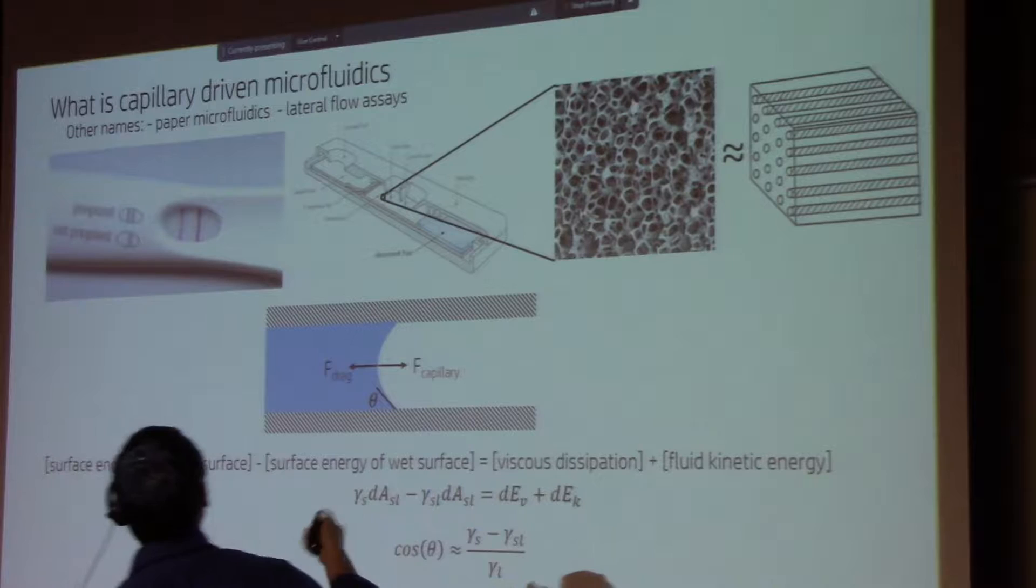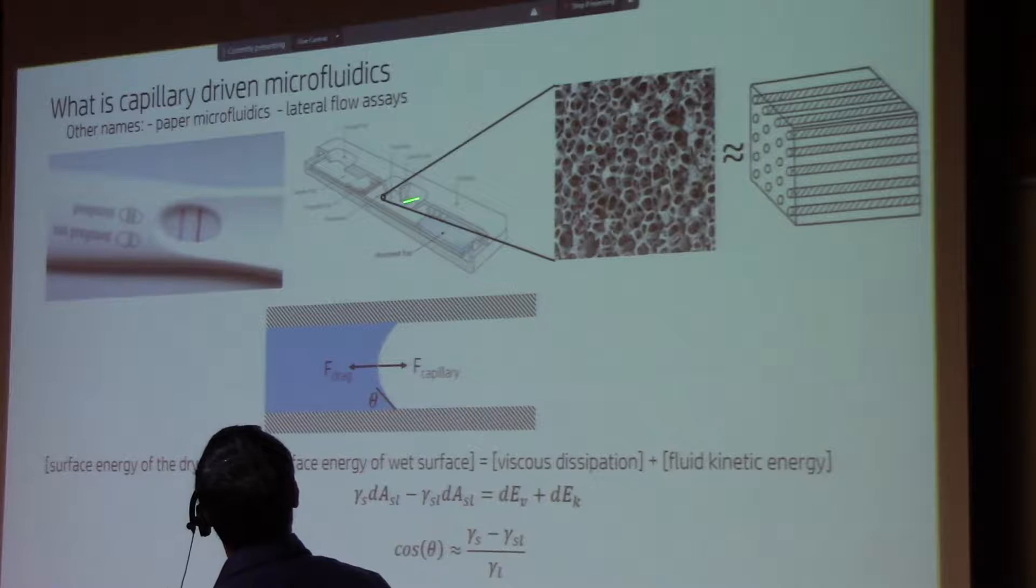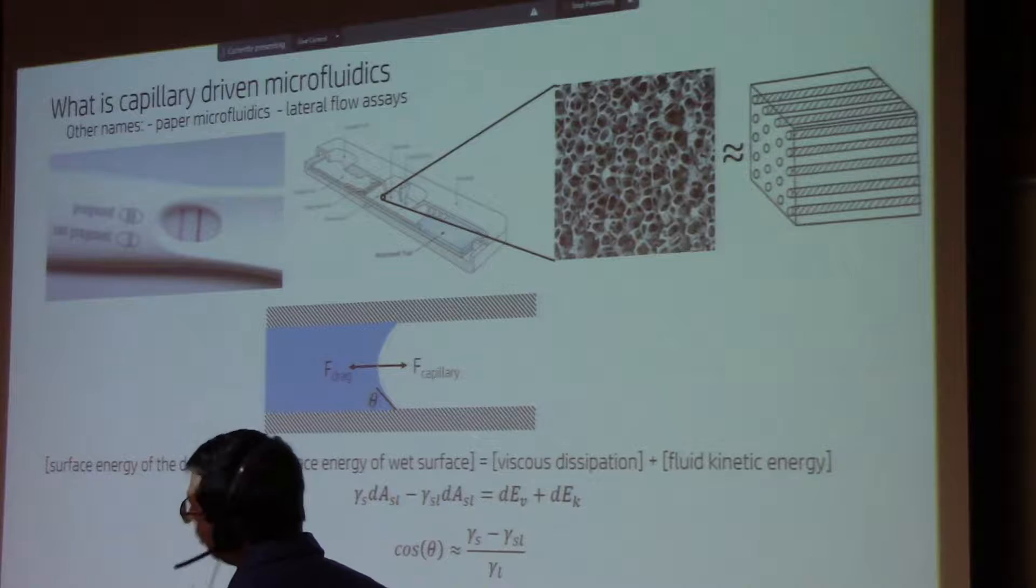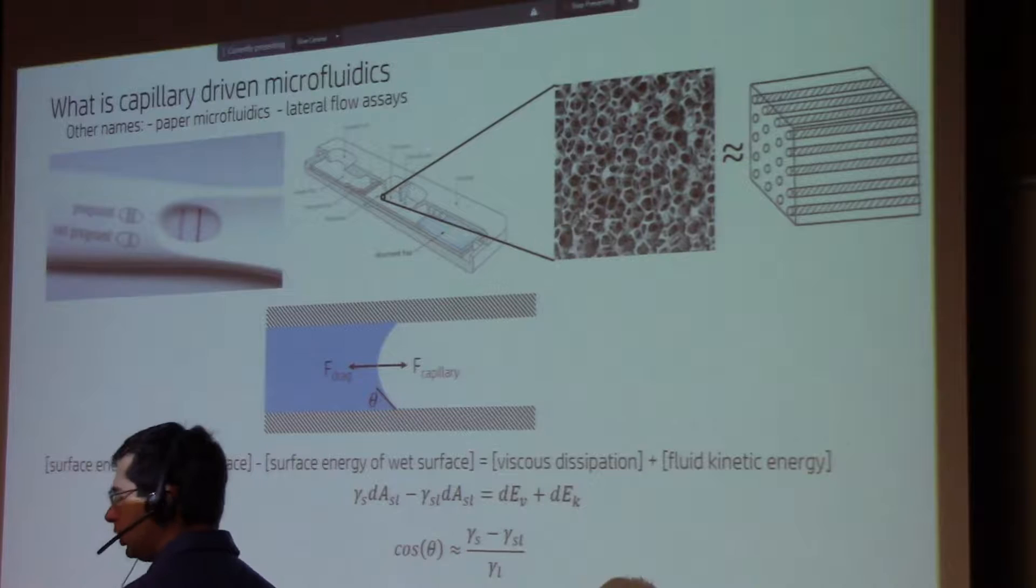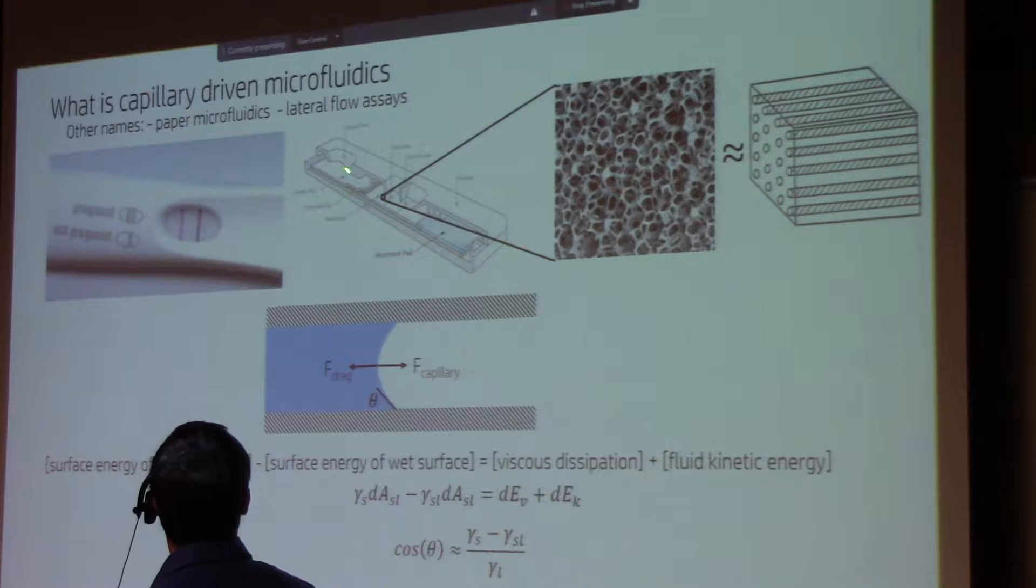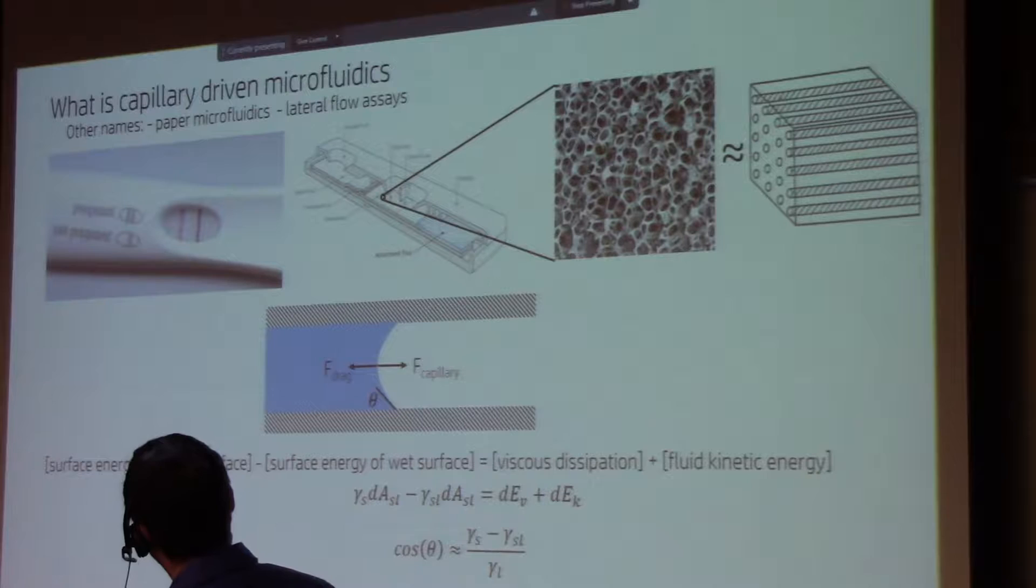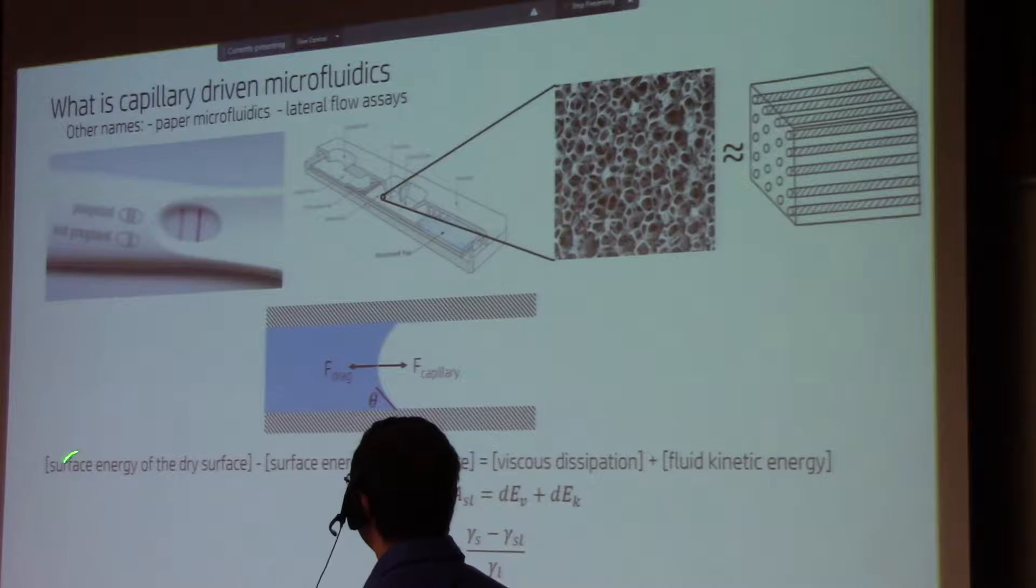So what happens when you put your sample in here, the sample has an analyte. There is almost no sample preparation that occurs there directly. The sample has usually high concentration of analyte. I think for this is HCG, this hormone that is increased during pregnancy. Because the wet surface energy versus the dry surface energy is such that the balance of these energies outweigh the viscous dissipation and the kinetic energy of the fluid, which is driven by the velocity of the fluid.